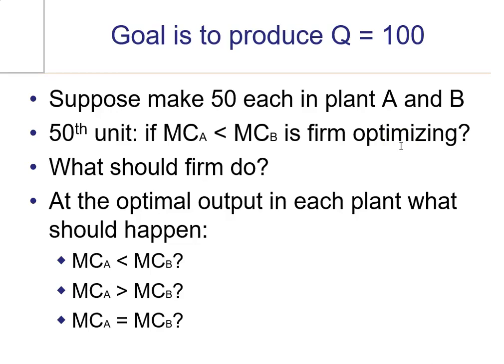Clearly not. So what should this firm do in this scenario? What this firm should do is they should make one more in plant A, make the 51st unit in plant A, and only 49 in plant B because the company would still produce 100 units.